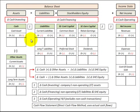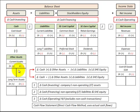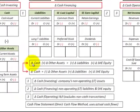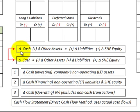Here we're going to be using the direct cash flow method to determine our cash flow statement. This is where we use the actual cash flows through our cash account. We're going to be using this equation where assets equal liabilities plus stockholders equity. With assets, I've broken it apart between the cash asset and all other assets. Let's look at how we'd set up our equation.